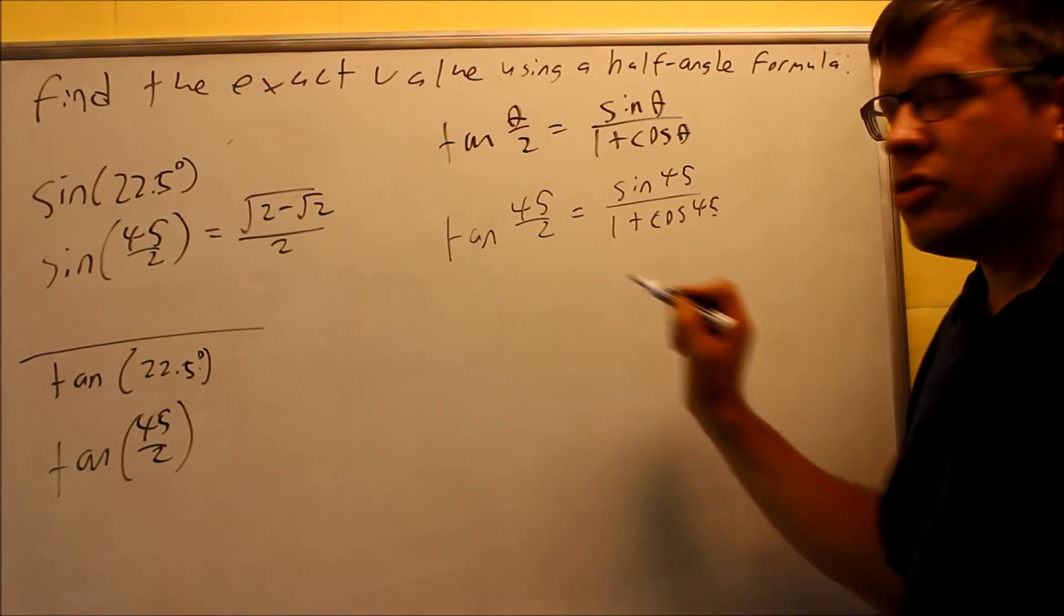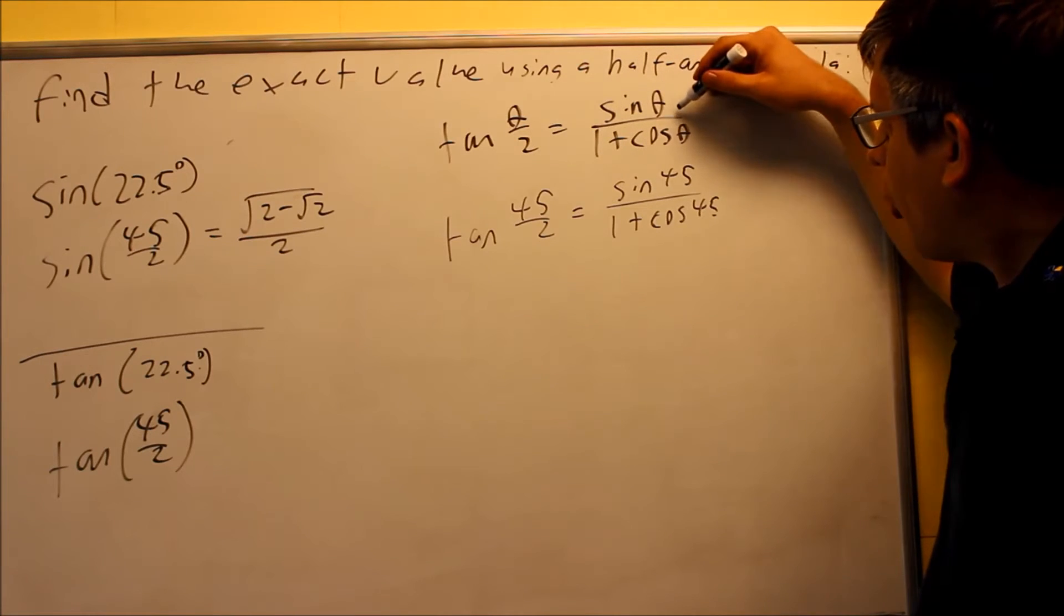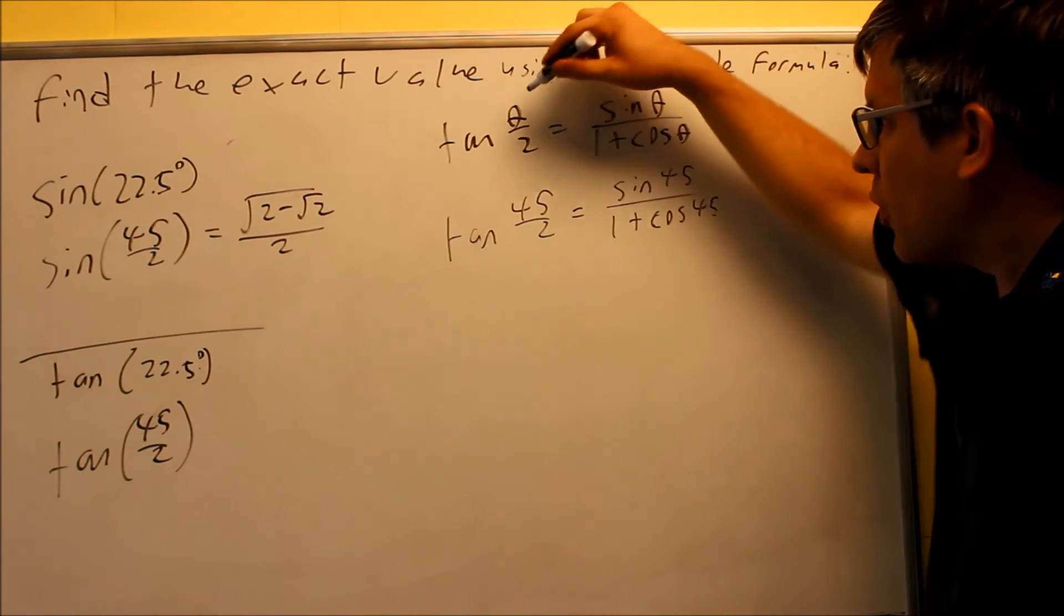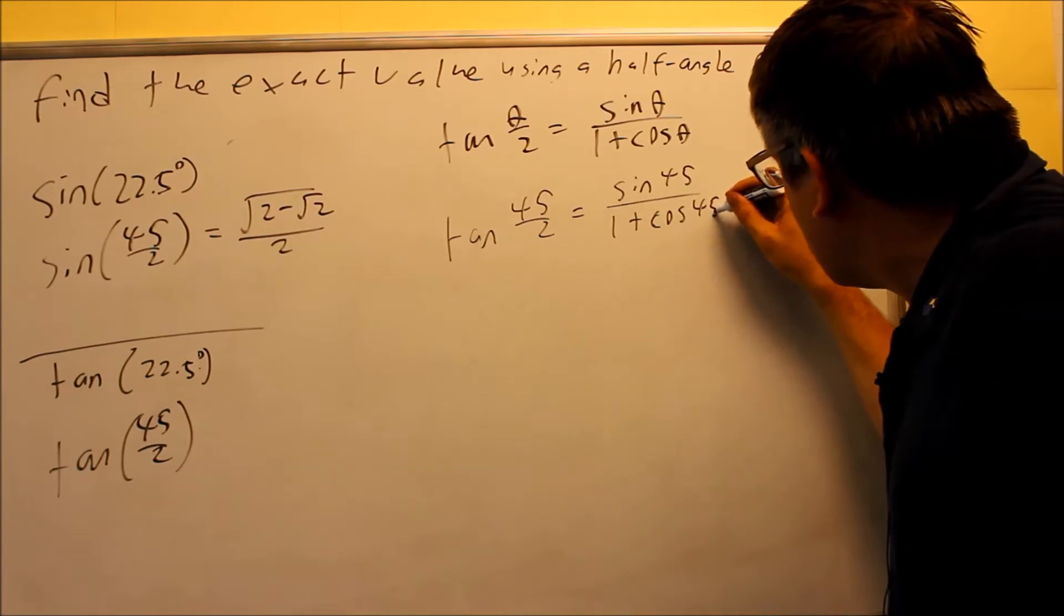Again, I'm not using the 2 on the bottom. The formula says if you have a 2 on the bottom, then on this side of the formula, you're only going to use theta. Whatever was on top of that fraction, that's what we're using. That's why it's just 45 only for each of those.